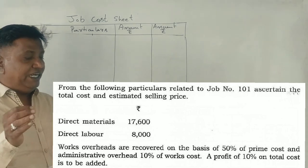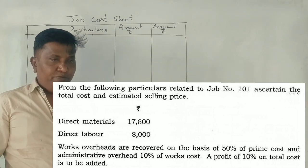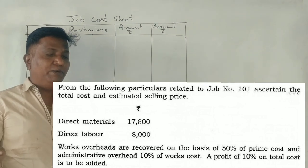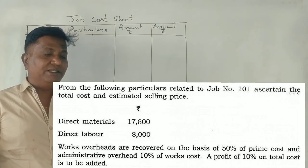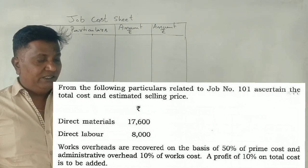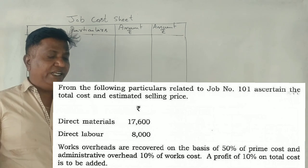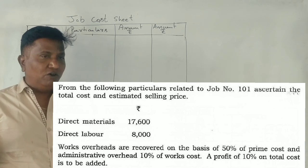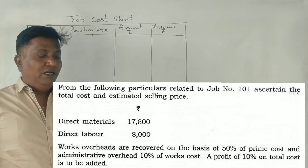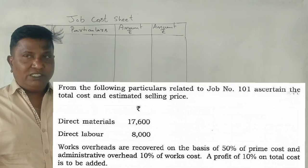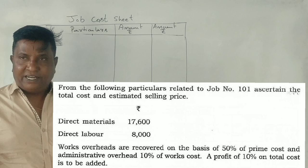Direct material, direct labor. Works overhead are recovered on the basis of 50% of prime cost, and administration overhead 10% on works cost. Profit 10% on total cost is to be added.